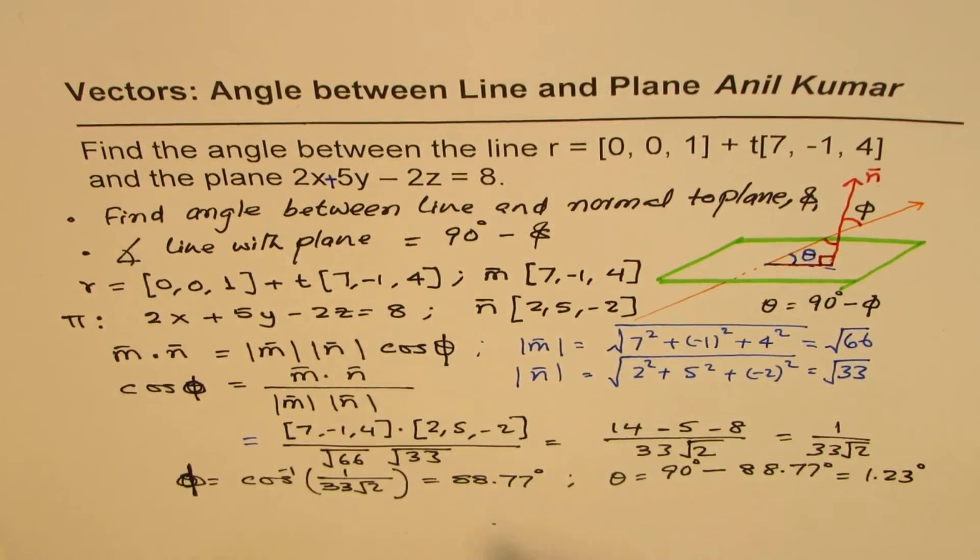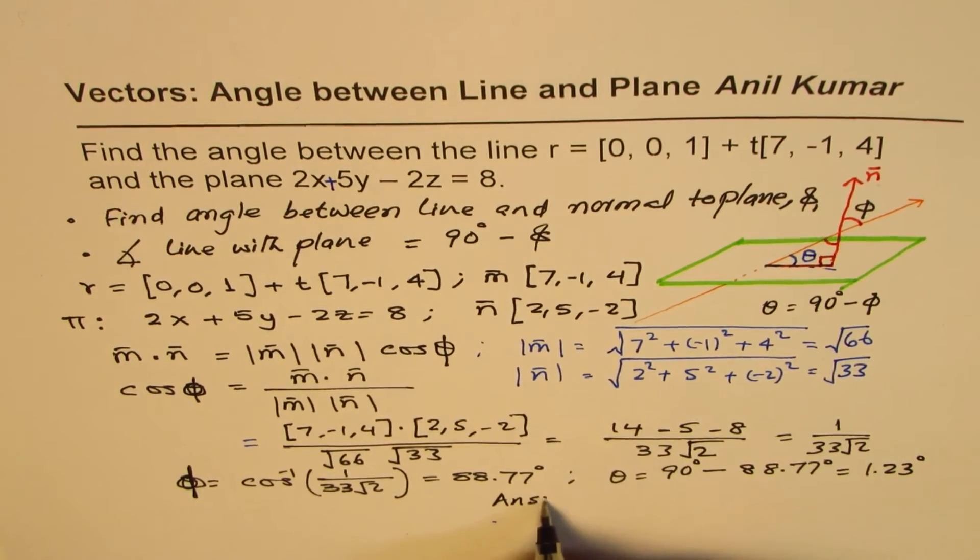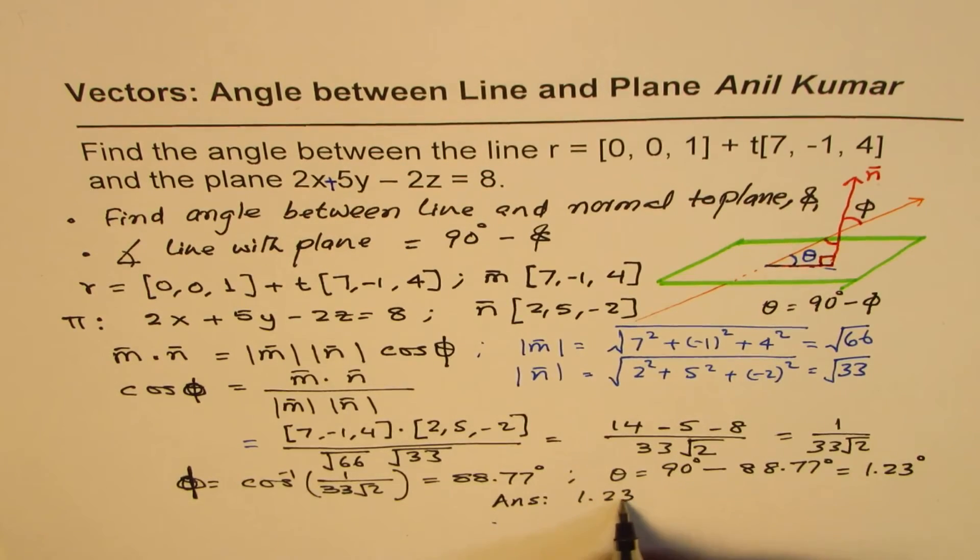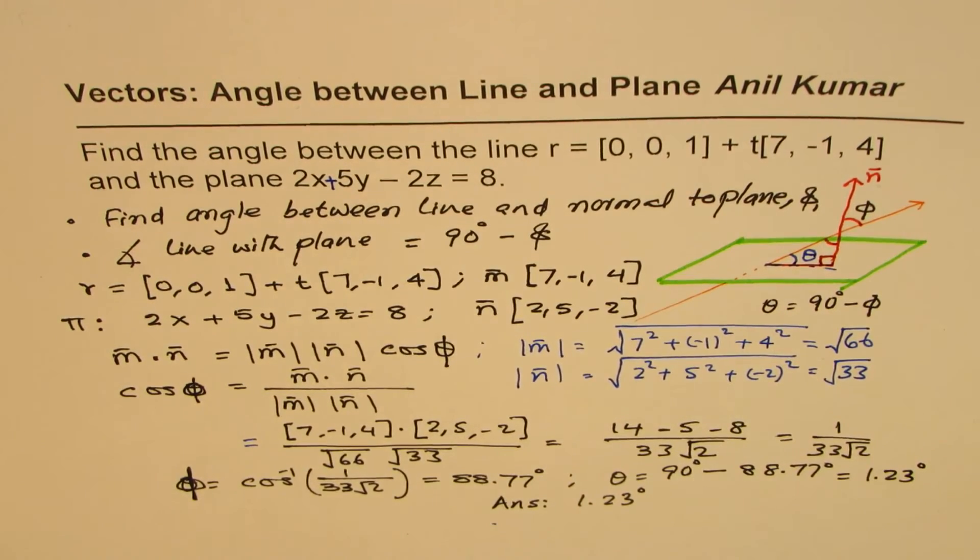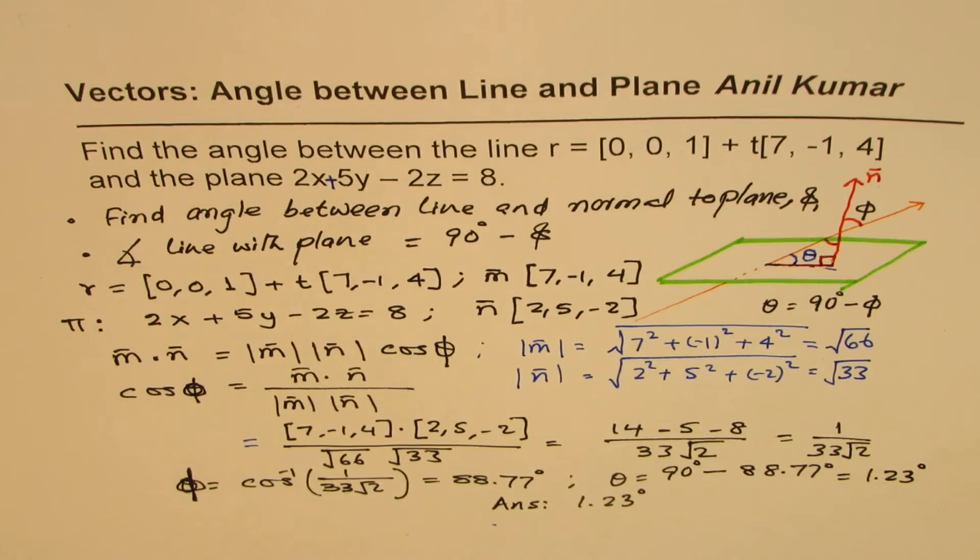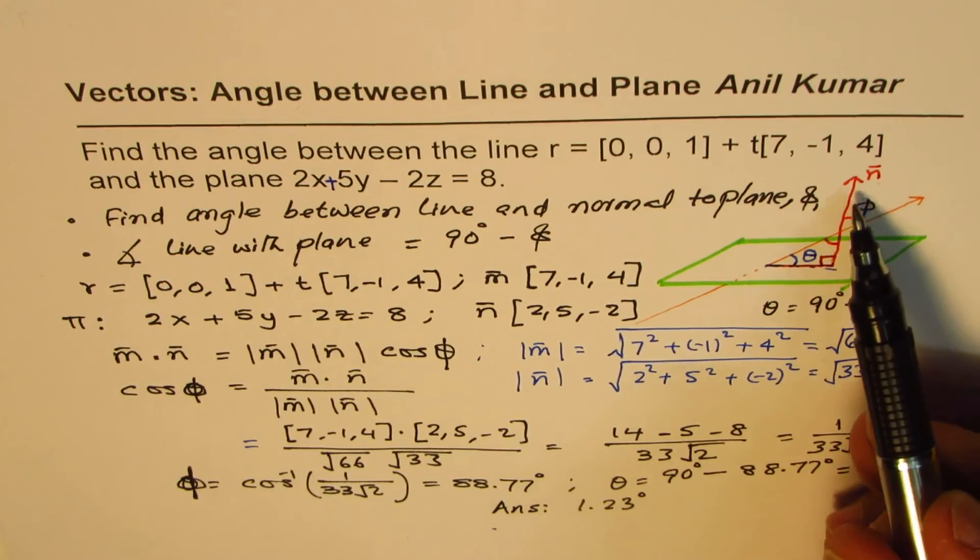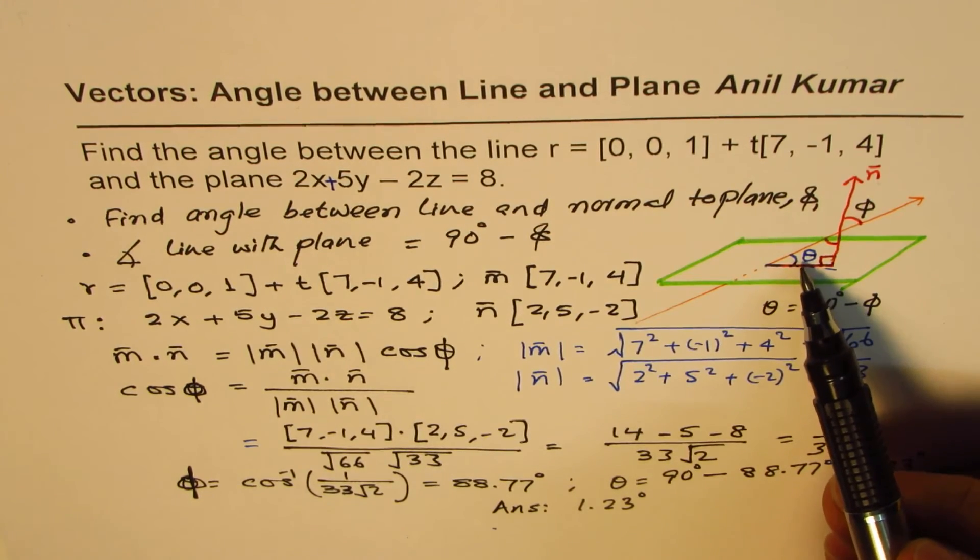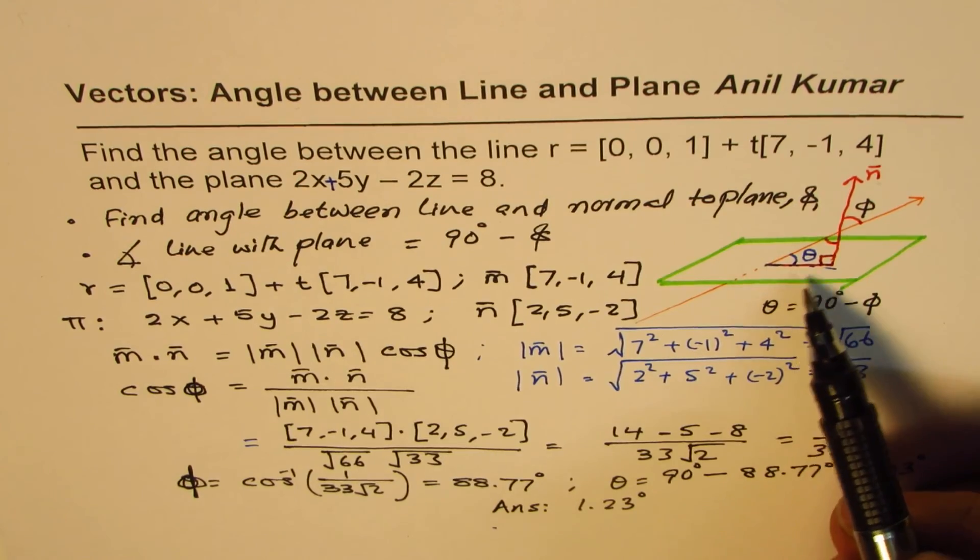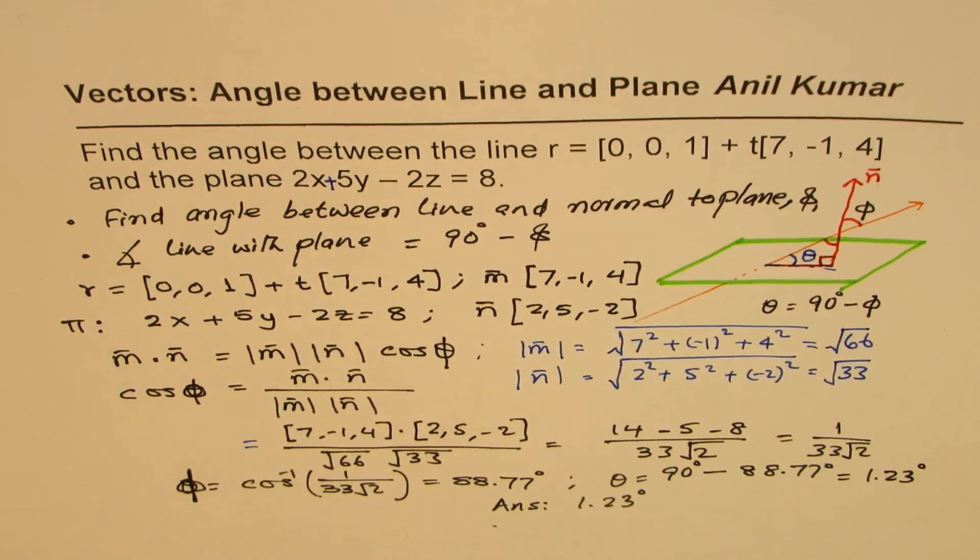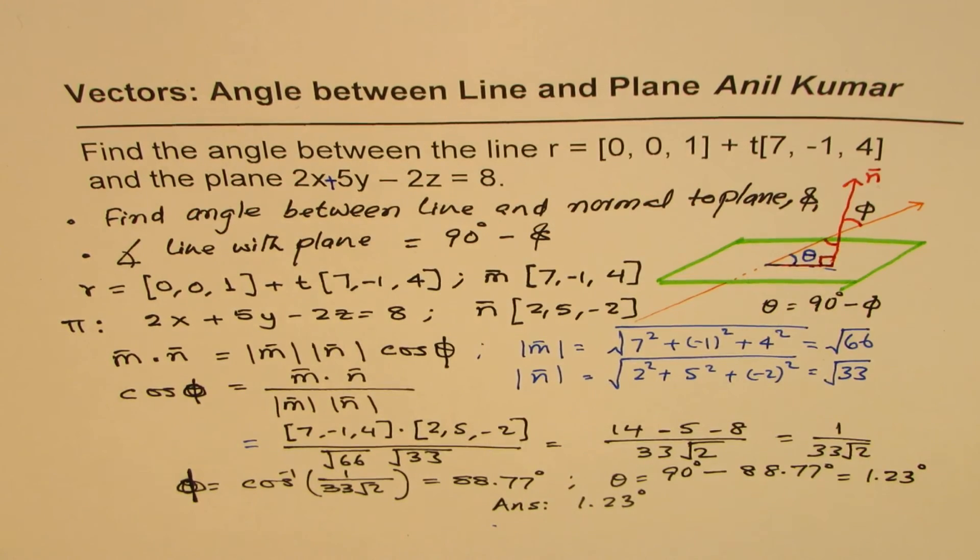So the answer we get in this particular case is that the angle which the line makes with the plane is 1.23 degrees. But anyway, you understand the method of solving. Whenever you're working with a line and a plane, you can find the angle between the line and the normal, and then take the complement of this to find the angle between line and the plane. I'm Anil Kumar, and I hope that helps. Thank you, and all the best.